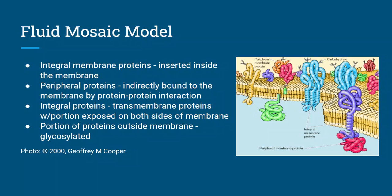Integral proteins are transmembrane proteins with portions exposed on both sides of the membrane, and the portion of the protein outside the membrane is glycosylated. Glycosylation is a process where carbohydrate moieties are attached to the hydroxyl group of another molecule — you can see the glycosylation shown here in blue.